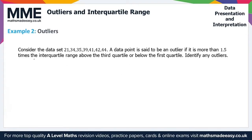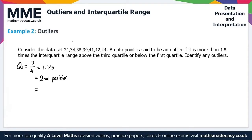For Q1, the number of data points is 7, so we do 7 divided by 4, which gives us 1.75. We always round this up, so Q1 is in the 2nd position. Looking at the second position in our dataset, Q1 = 34.